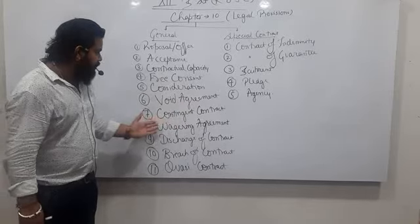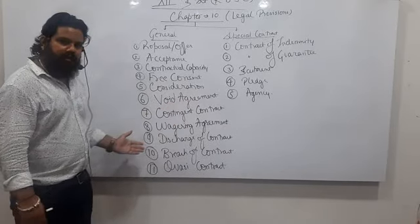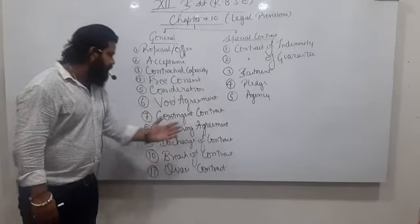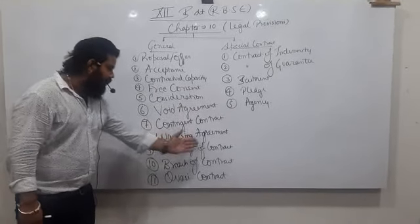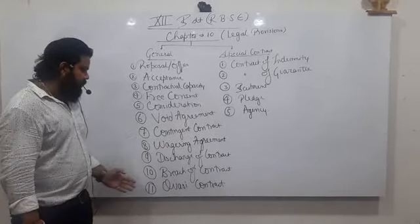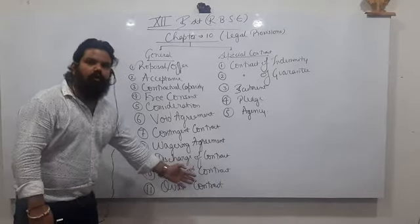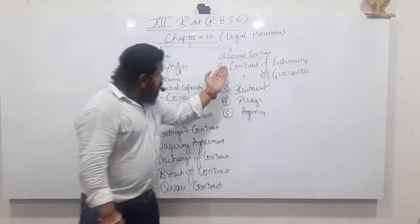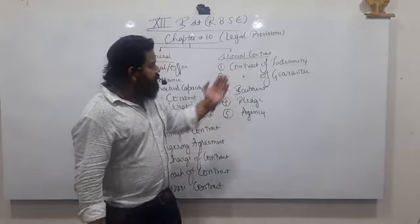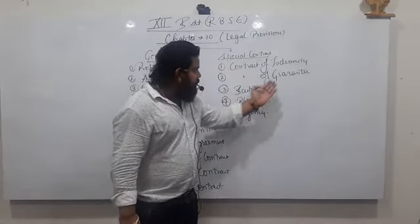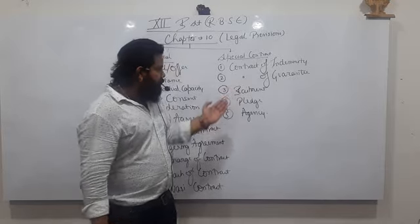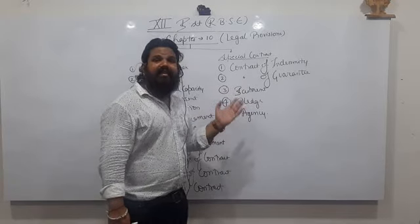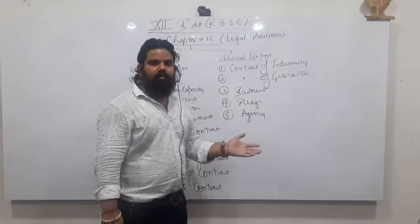The remaining points include void agreement, contingent contract, vagary agreement, discharge of contract, breach of contract, and causey contract. Especially in guarantee contract, bail rent, pledge, and agency.